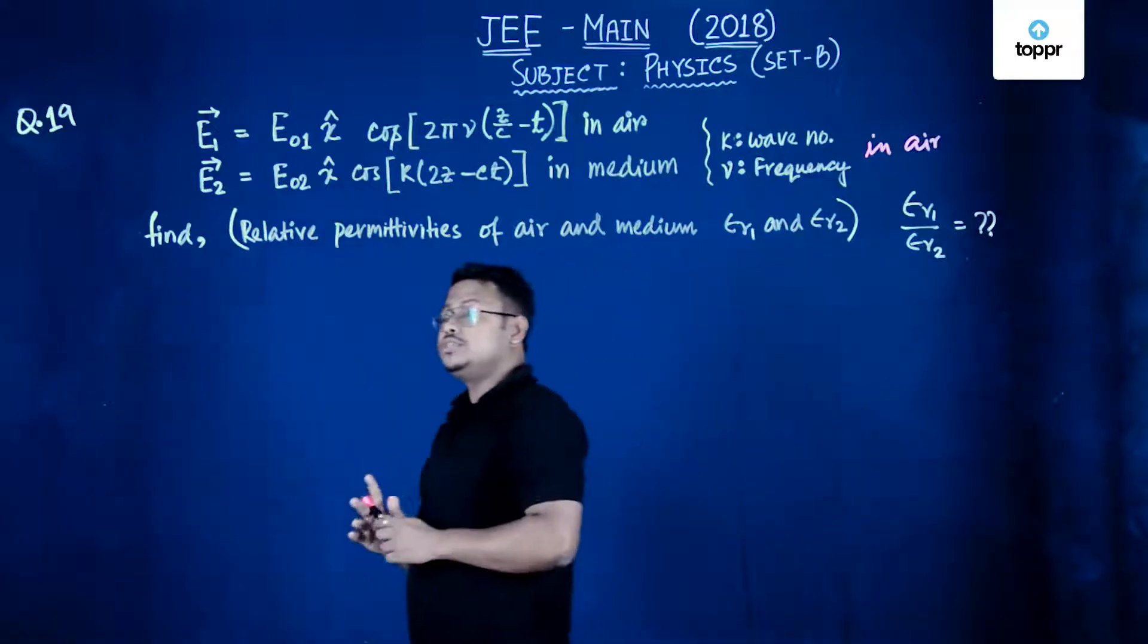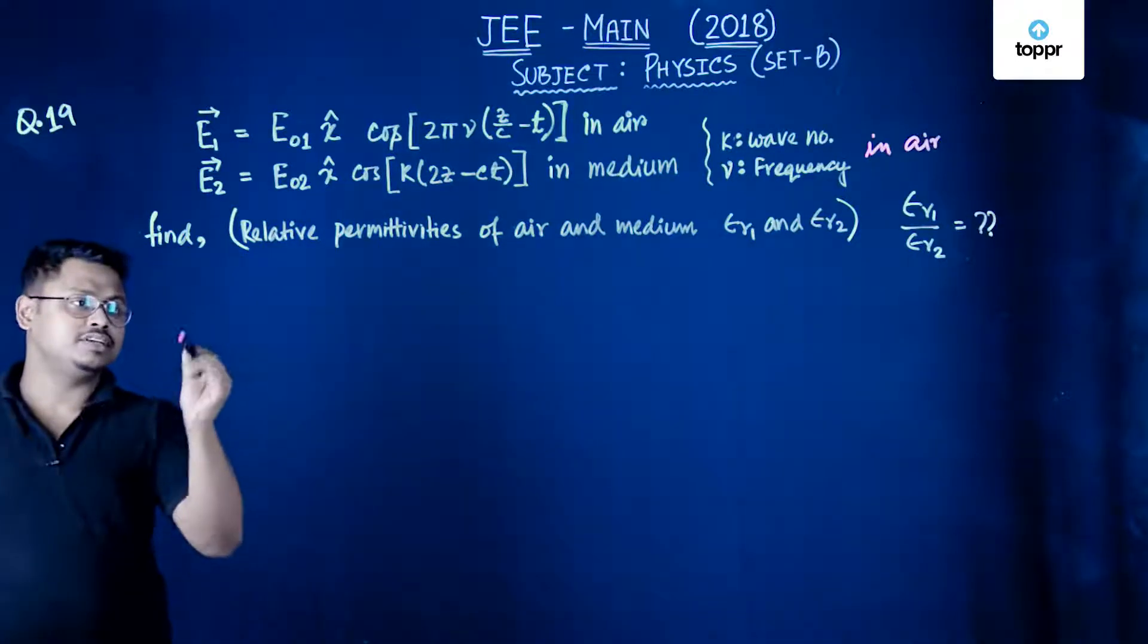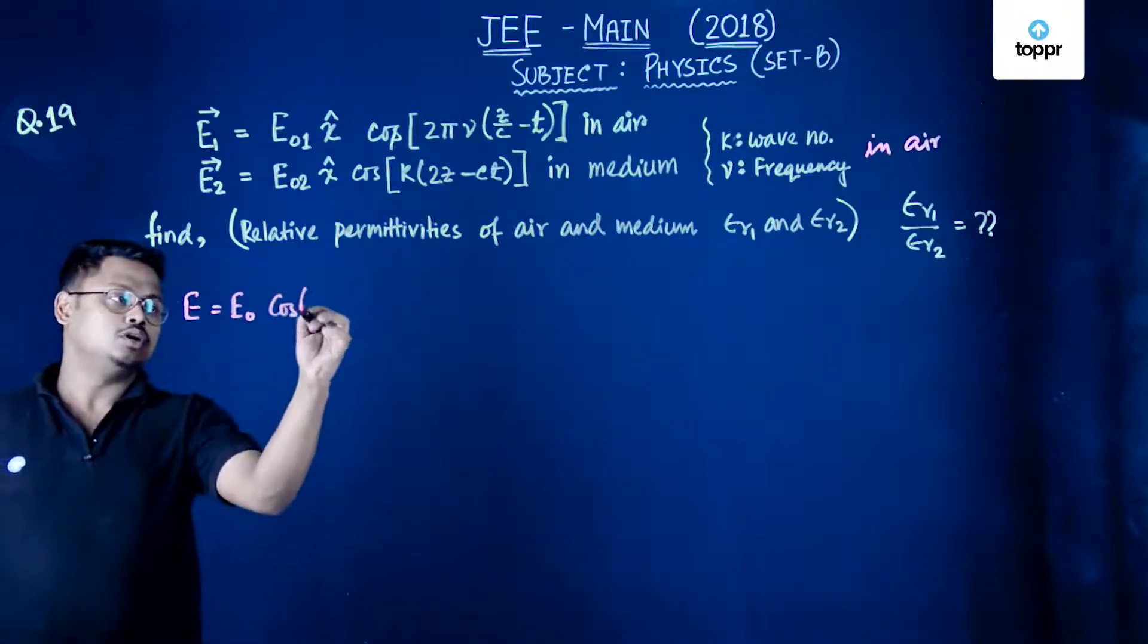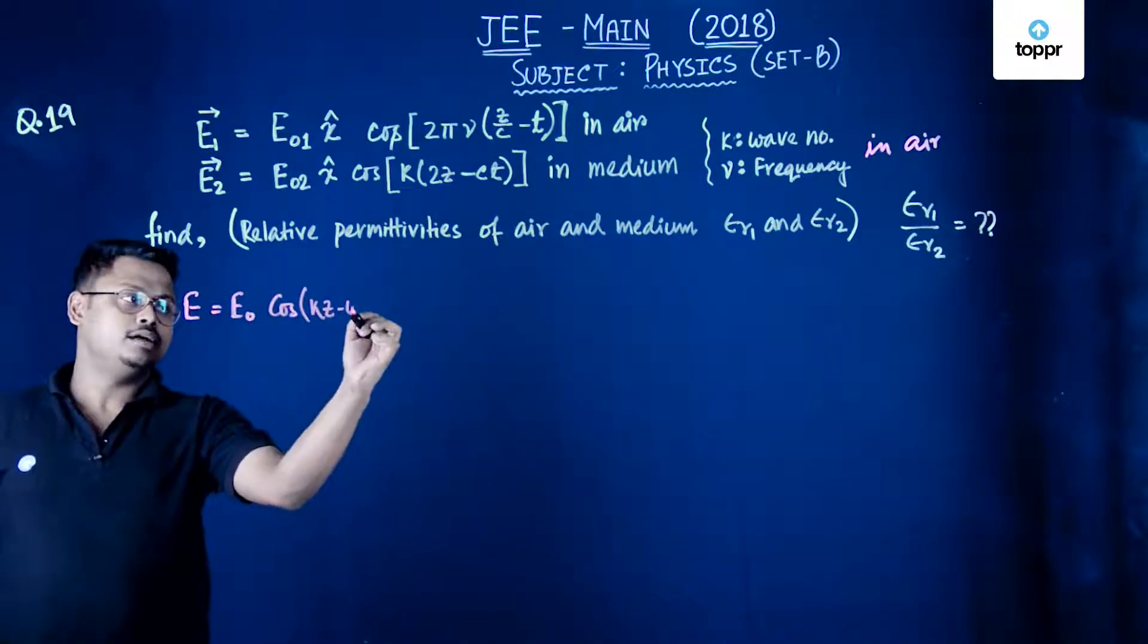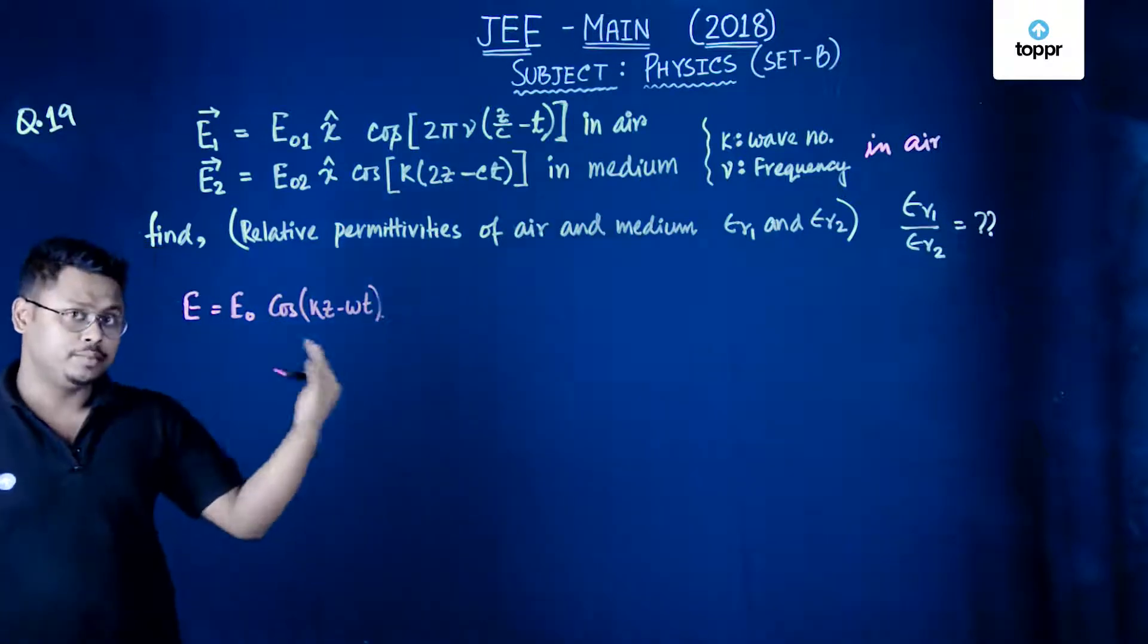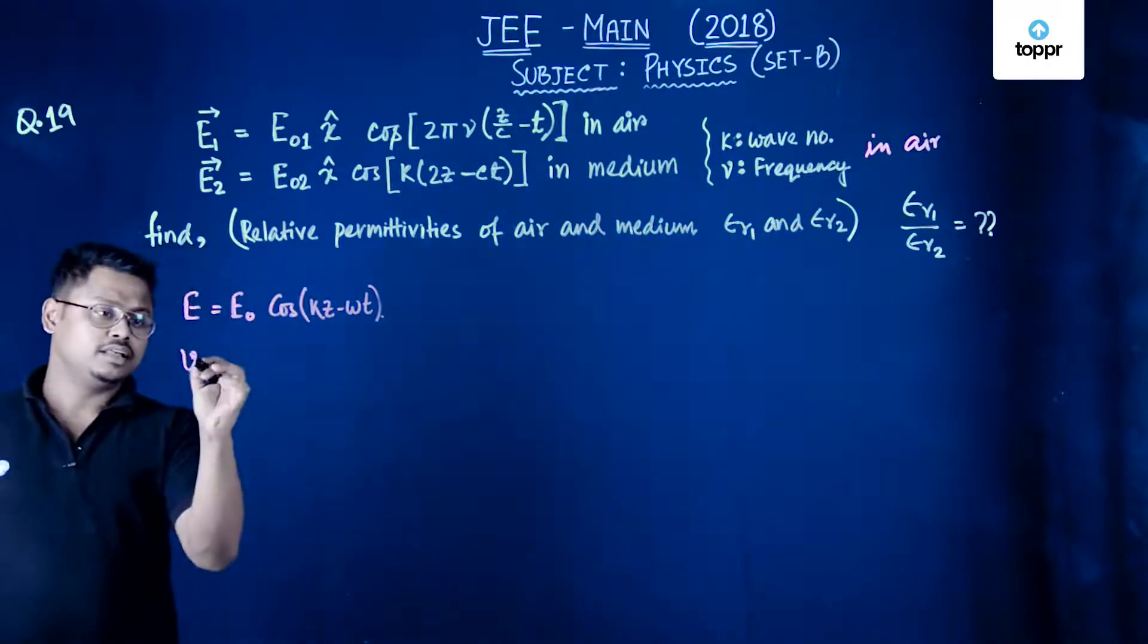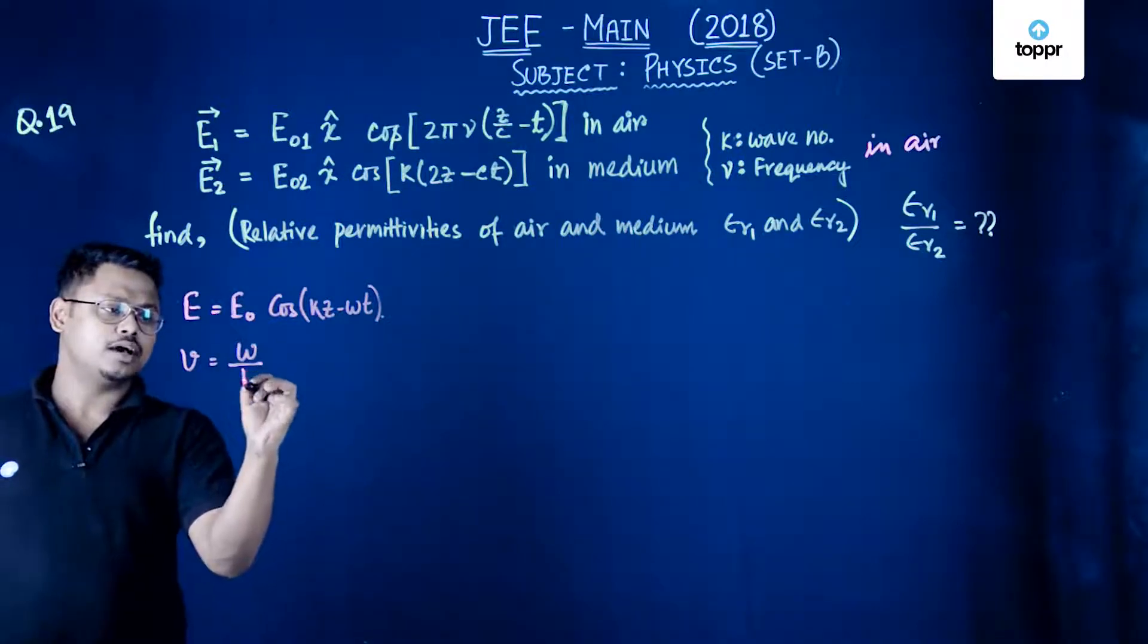So we know this wave, the standard format of this wave is given as e equals to amplitude e0 cos k z minus omega t for any medium. And if the velocity of the wave in that medium is v then v can be written as omega upon k.